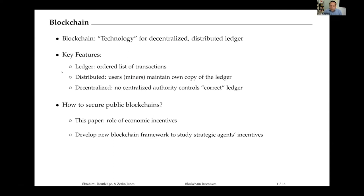Now, for this ledger to be useful, we all need to somehow agree on which is the right version of the ledger, and we ideally hope that transactions are immutable so we know they are final as well. Blockchains obtain this through a consensus protocol, which mixes a sequence of design decisions. We can think about which transactions are valid, how users get to add blocks, and where new blocks should be added to the blockchain. What we're really trying to do is develop a framework that lets us understand the economic incentives that arise from these design decisions—our goal is to study strategic agents' incentives to follow the protocol.